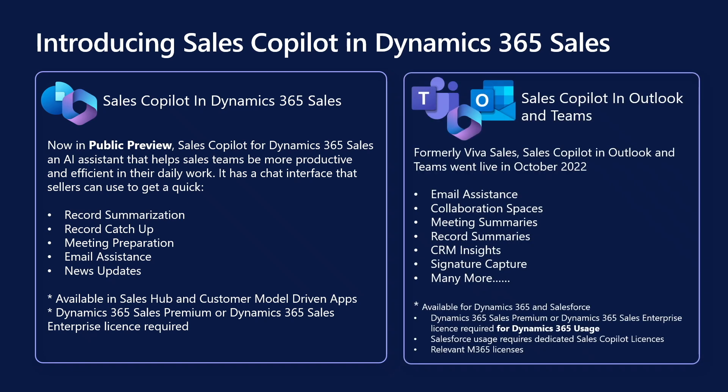We also have Sales Copilot in Outlook and Teams, formerly known as Viva Sales, which is our in-the-flow-of-work offering designed to bring CRM insights to sellers in their Microsoft 365 productivity apps and provide AI-driven insights, summaries, recaps, next-step actions, and many more. We have many tech talks on our Fast Track Community channel and videos on this channel already covering these capabilities, so go and check them out if you want to know more and stay up to date with the latest offerings. Today's session is all about Sales Copilot in Dynamics 365 Sales.